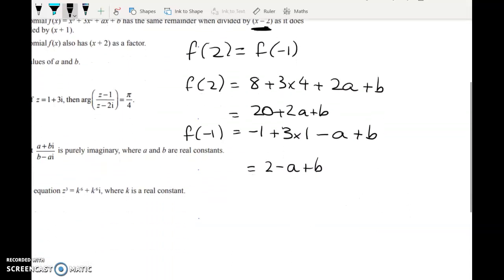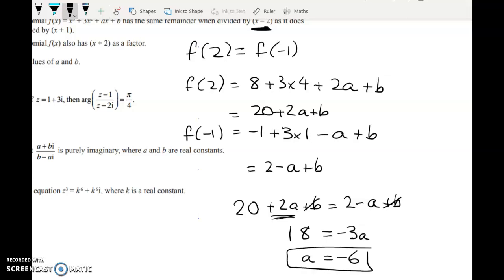So we can put those together already and get some kind of condition. So 20 plus two a plus b is equal to two minus a plus b. So that's good because that means that we can solve for a straight away, which is slightly easier than it could have been. So we've got 18 is equal to negative three a, giving me a is equal to negative six. All right, so that's the first bit done.